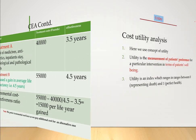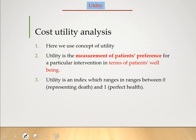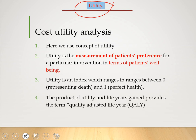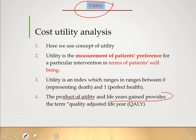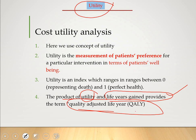Cost utility analysis uses the concept of utility. Utility is a product applied to the life expectancy gains from cost-effectiveness analysis — we multiply the utility value with the life expectancy gains, or the effectiveness of the therapy. The ultimate unit will be called QALY, which stands for Quality-Adjusted Life Year. This is the modern terminology we are going to use.